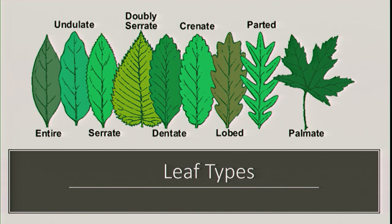There are different kinds of leaf types. You have entire leaves, serrated leaves, doubly serrated leaves — those are a lot of our elm species. You also have dentate, lobed, parted, and palmate. We have a lot of maples in this area that are going to be palmate.